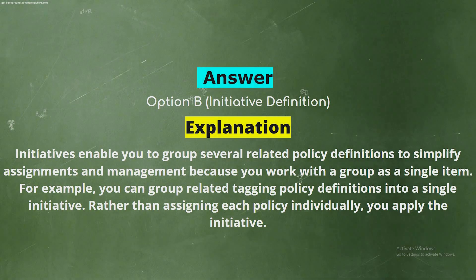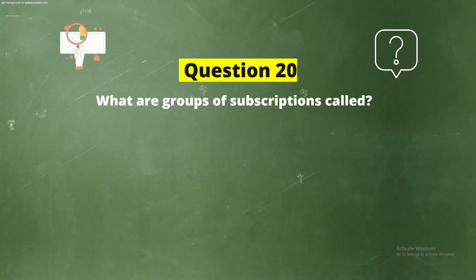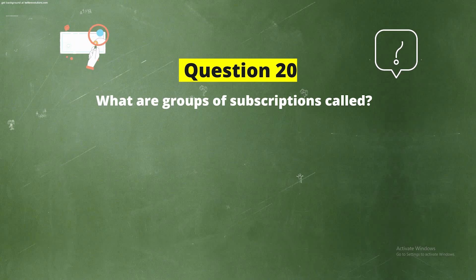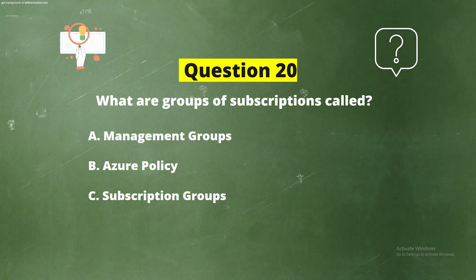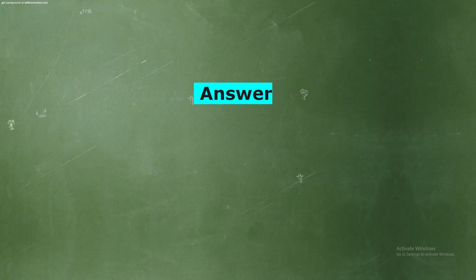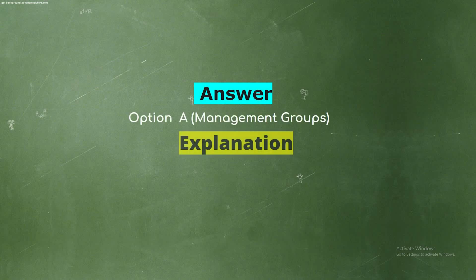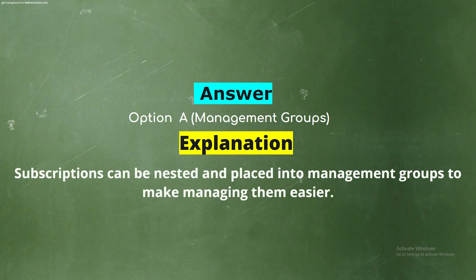Question 20. What are the groups of subscriptions called? Option A: Management Groups. Option B: Azure Policy. Option C: Subscription Groups. Option D: ARM Groups. The correct answer is Option A, Management Groups. Explanation: Subscriptions can be listed and placed into management groups to make managing them easier.